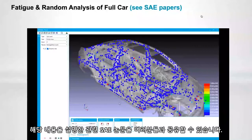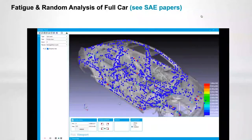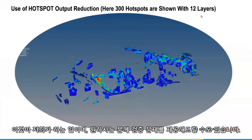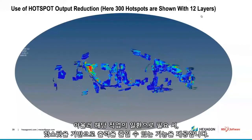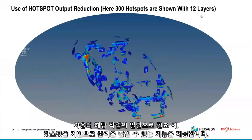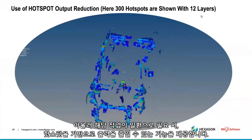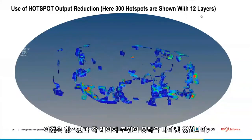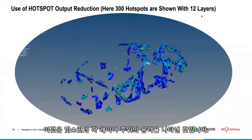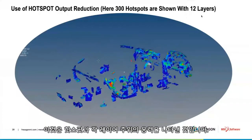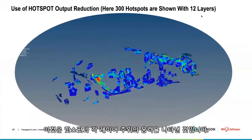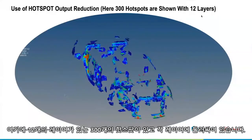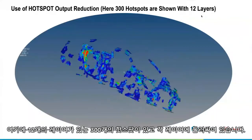Something we also do — and it's also a test problem we can provide — is the ability to reduce the output based on hotspots. This is a plot of the hotspot stress with layers kept around each one. Here we have 300 hotspots with 12 layers surrounded around each one.